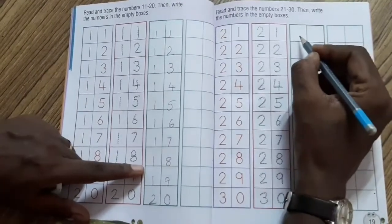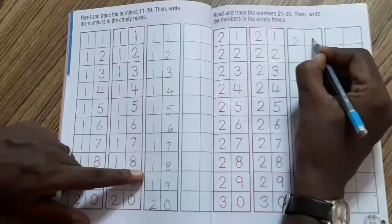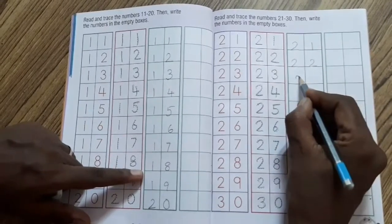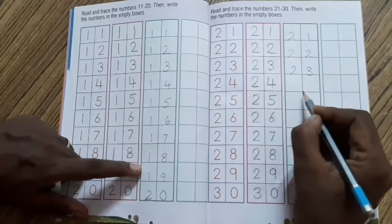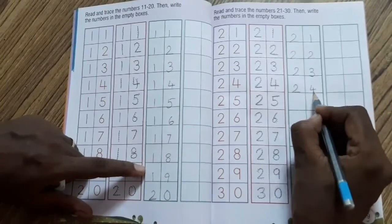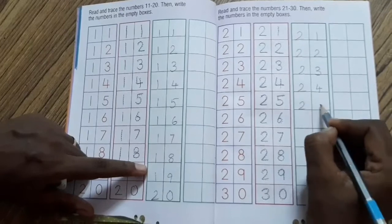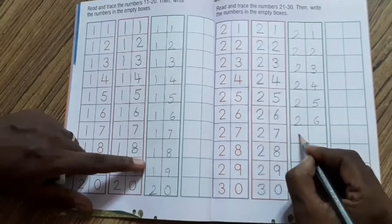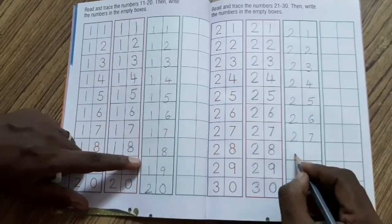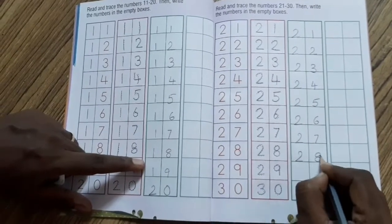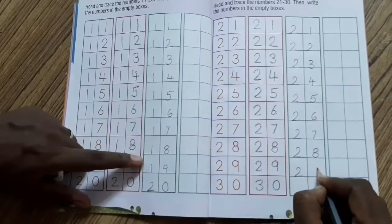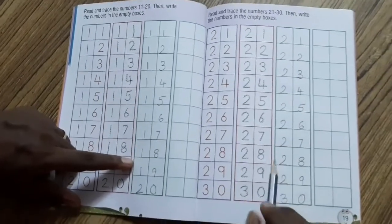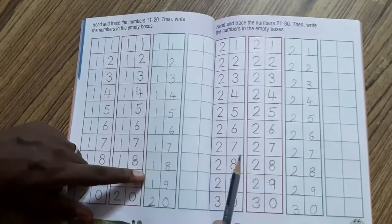So, what do we need to do? We need to say 2, 1, 21. 2, 2, 22. 2, 3, 23. 2, 4, 24. 2, 5, 25. 2, 6, 26. 2, 7, 27. 2, 8, 28. 2, 9, 29. 3, 0, 30. Three times 1, 2, 3. Understood?